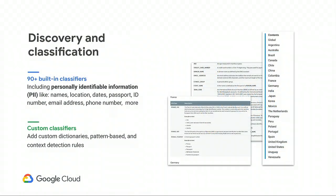DLP is made up of three pillars, the first of which is discovery and classification. A compliance officer whose job is to ensure that credit card data is protected can use DLP to tokenize the data. To be really thorough, they need to audit all persisted data in your company to make sure credit cards don't show up anywhere surprising. DLP can help find and identify credit card data along with many other types of PII across BigQuery, Google Cloud Storage, and Datastore, and even data not stored in the cloud. The findings can then be used to take remediation steps such as anonymization, which takes us to our next pillar.